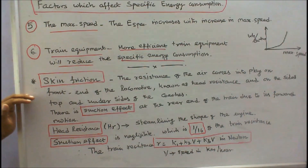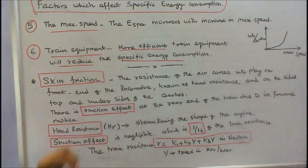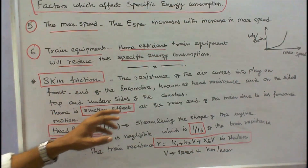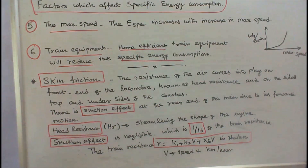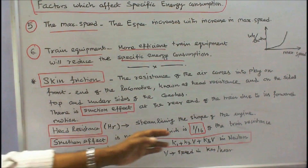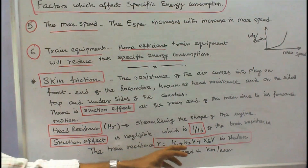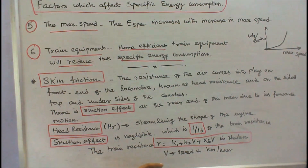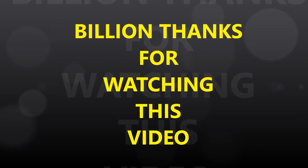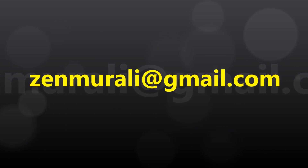Skin friction: air resistance at the front end of the locomotive is known as head resistance, while resistance on the sides, top, and undersides of the coach is known as skin friction. There is also a suction effect at the rear end due to forward motion. Head resistance may be reduced by streamlining the engine shape. The suction effect is negligible — about one-sixteenth of the train resistance. Therefore train resistance R equals K1 plus K2 into V plus K3 into V squared in Newtons, where V is speed in km/h.